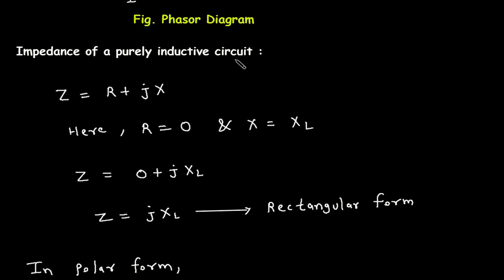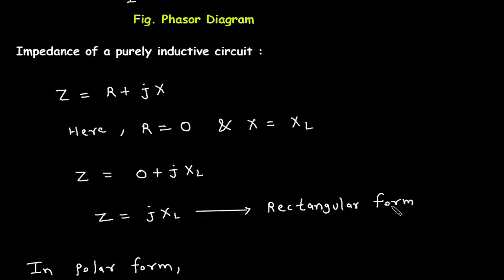Impedance of a purely inductive circuit. Impedance is represented by Z. Z equals R plus jX, where R is the resistive part and X is the reactive part. In a purely inductive circuit, R equals 0 — there is no resistance — and the reactive part is XL, the inductive reactance. Therefore, Z equals 0 plus jXL, or simply Z equals jXL. This is the rectangular form.